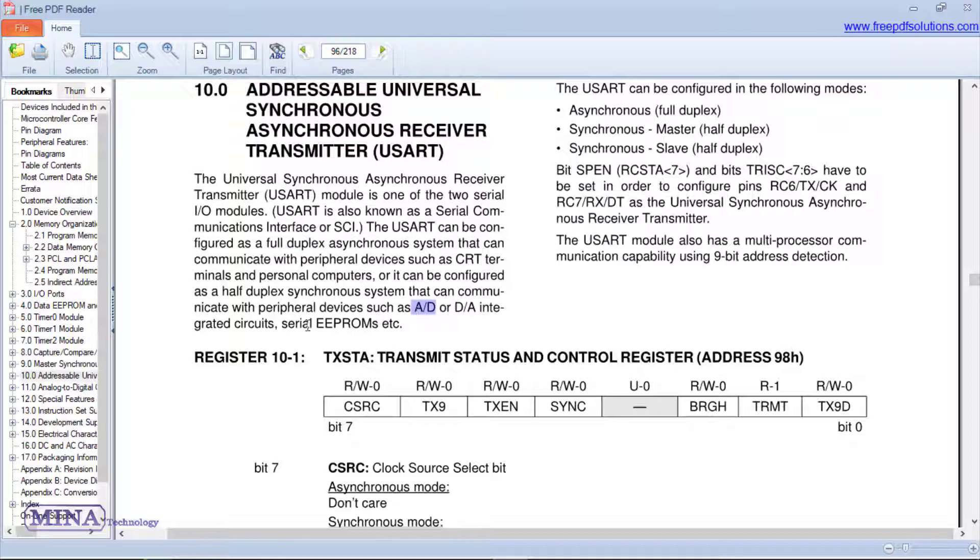The USART can be configured in the following modes: asynchronous full-duplex, synchronous master half-duplex, synchronous slave half-duplex. In this tutorial, we have used asynchronous half-duplex data transmission.